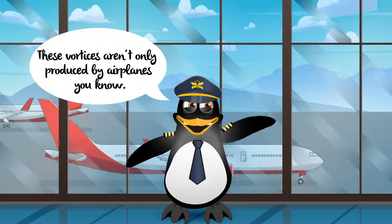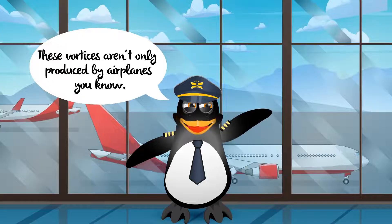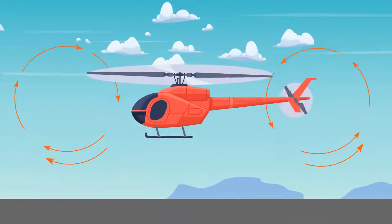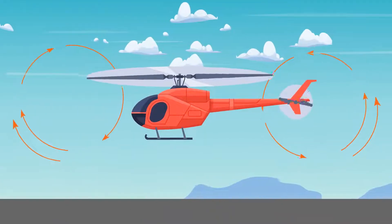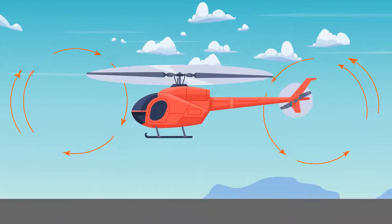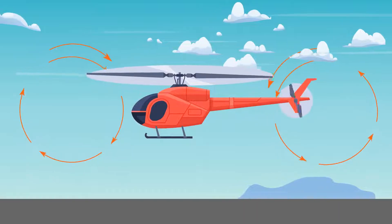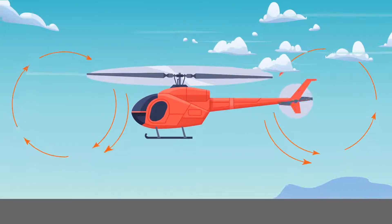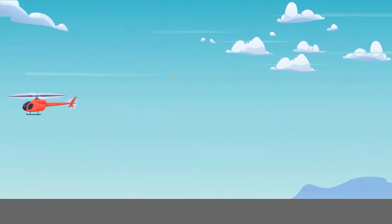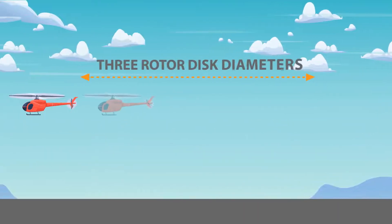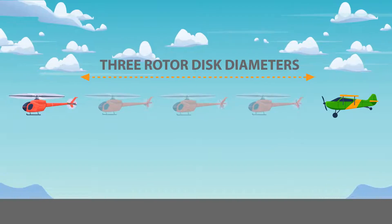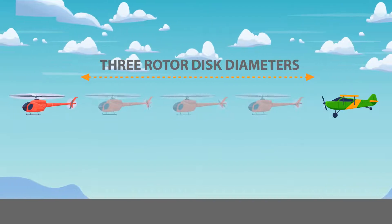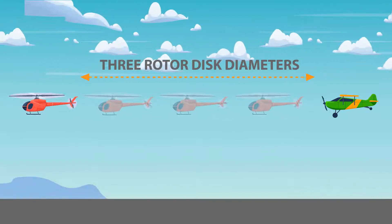These vortices aren't only produced by airplanes. A hovering helicopter will produce a downwash from their main rotors, having a similar effect as the vortices from an airplane. A good rule of thumb is to keep at least three rotor disc diameters away from a hovering helicopter to avoid the effects of this downwash.